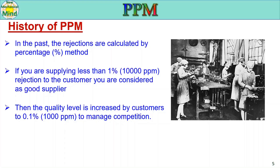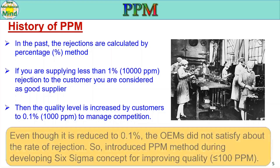Even though the target was reduced to 0.1%, OEMs were not satisfied about the rate of rejection. So the PPM method was introduced during the development of the Six Sigma concept, aiming for quality levels of less than 100 PPM. Since there was no satisfaction with the percentage method, OEMs developed the PPM method alongside the Six Sigma concept.